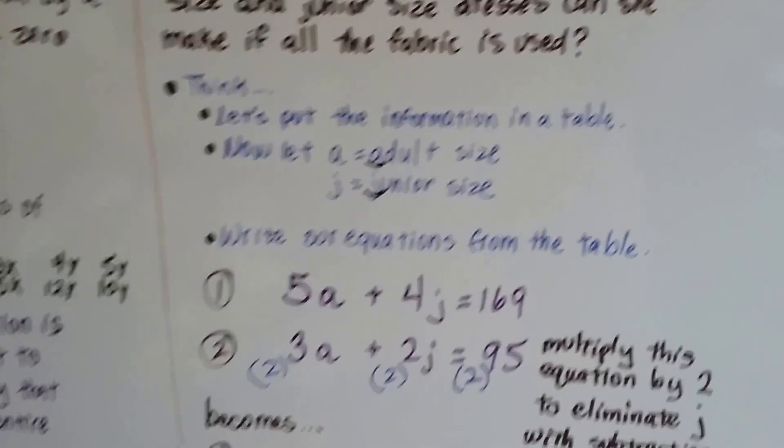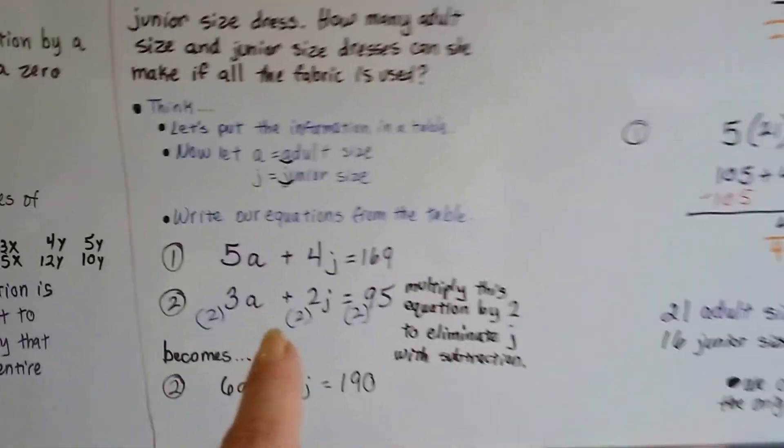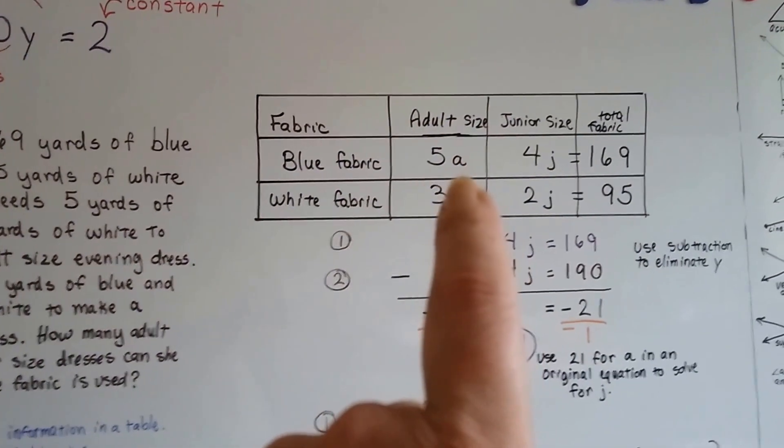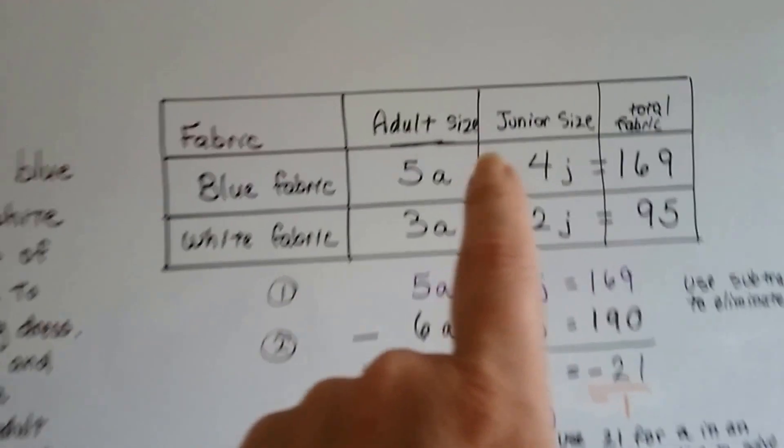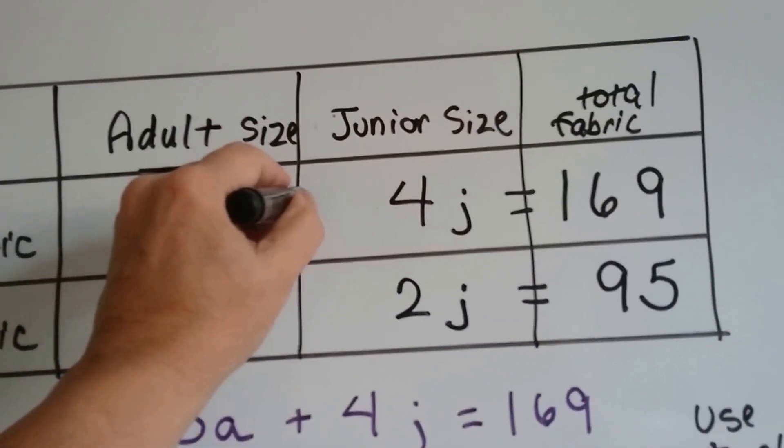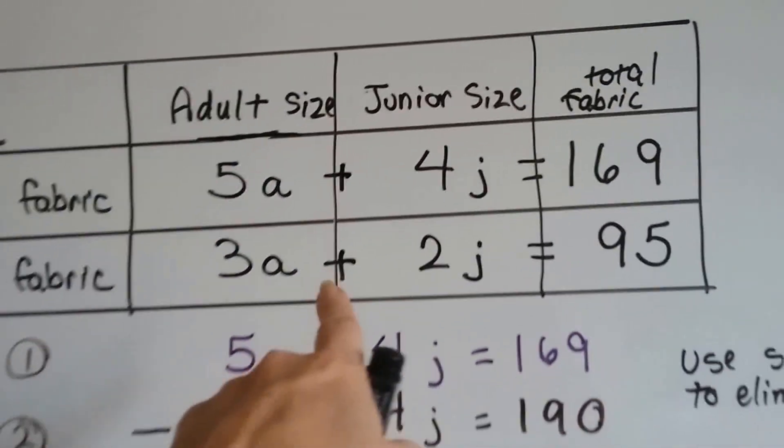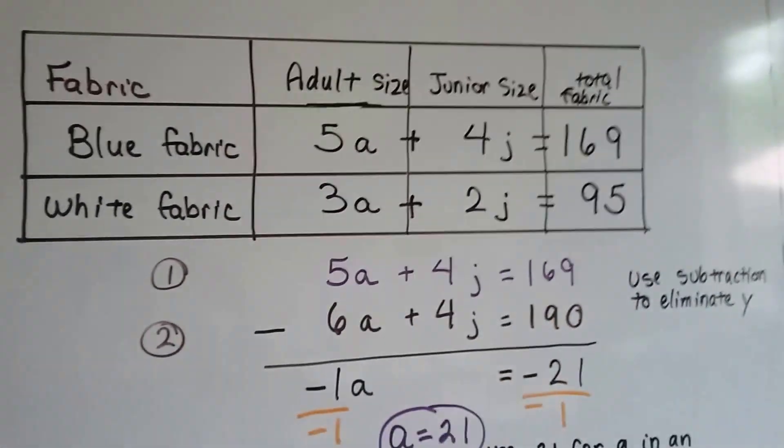Alright? Now we can write our equations from the table. We've got 5A and this is going to be plus 4J equals 169 and 3A plus 2J equals 95.